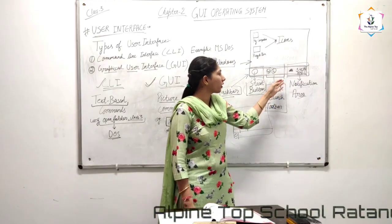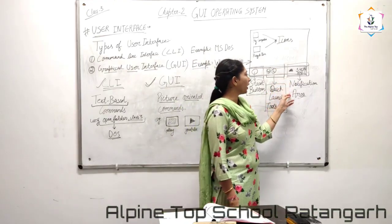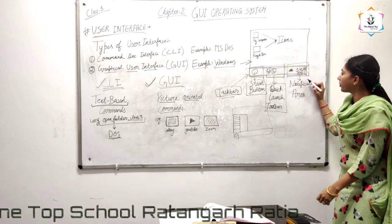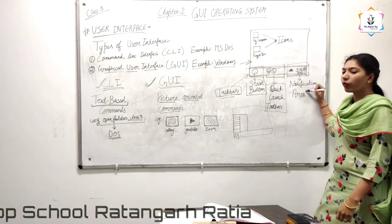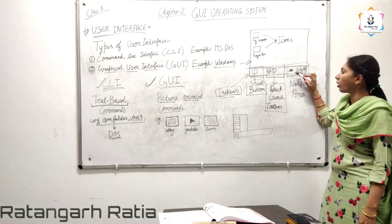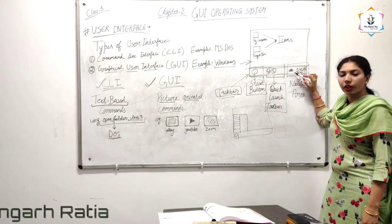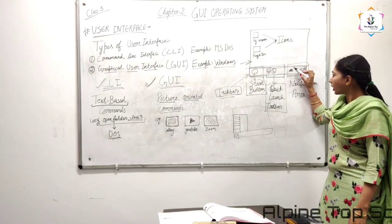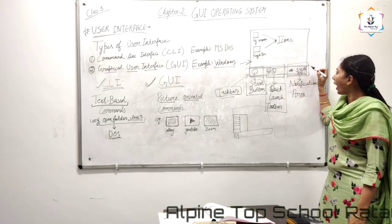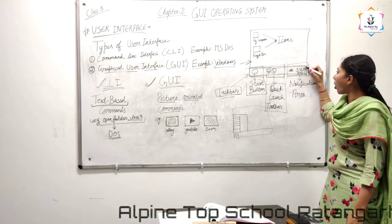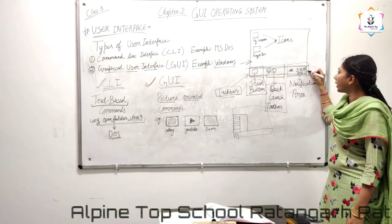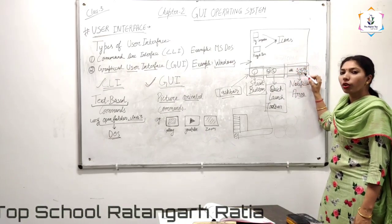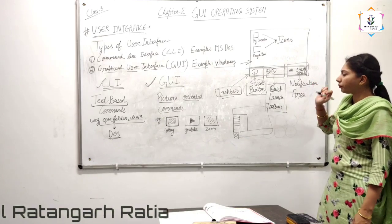Next is the notification area. What is the notification area? In our notification area we get notifications about computer updates, network connectivity, and the clock and date. These things are included in our notification area.